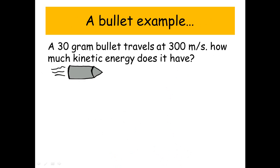A bullet example. A 30 gram bullet travels at 300 meters per second. How much kinetic energy does it have?